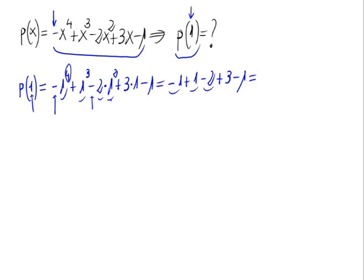And operating this we would have, minus 1 plus 1, 0, minus 2, minus 1 is minus 3, plus 3, that is 0. So p(1) is equal to 0.